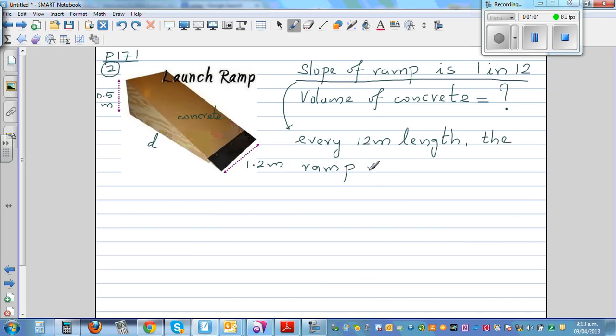The slope of the ramp is 1 in 12, meaning the height is 1 meter for every 12 meters. So if the height is 0.5 meters, how much would be the length? The length would be 0.5 times 12, which is 6 meters.